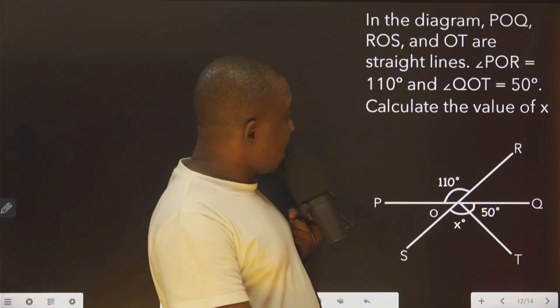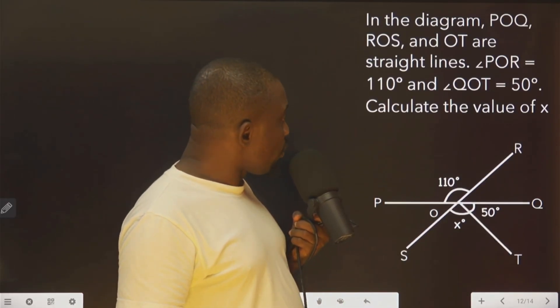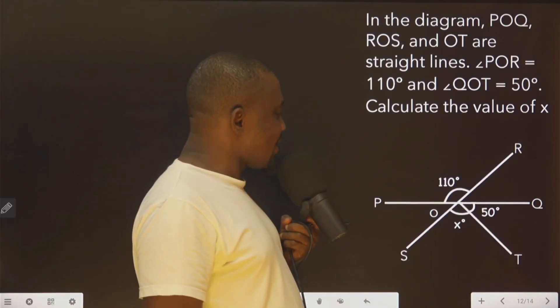Let's look at this. It says in the diagram, POQ, ROS, and OT are straight lines.